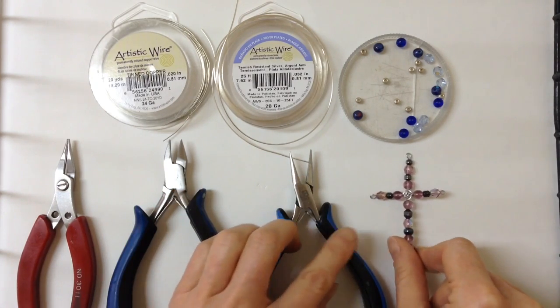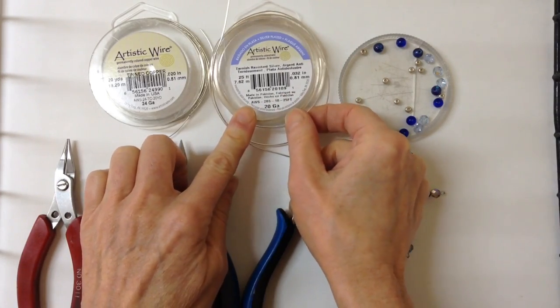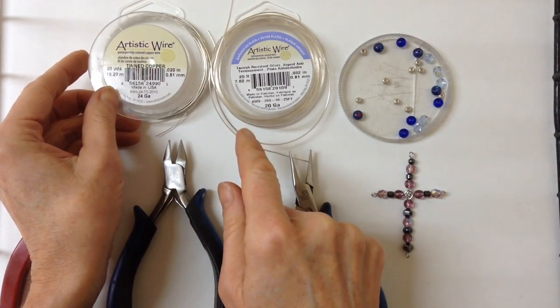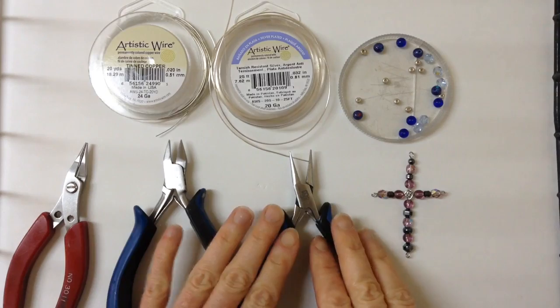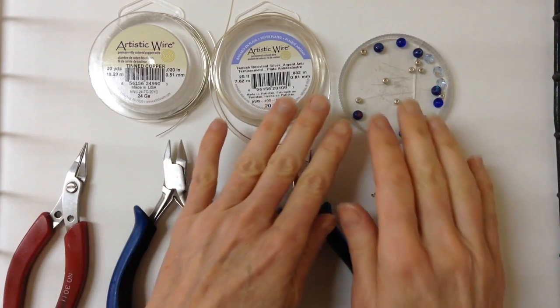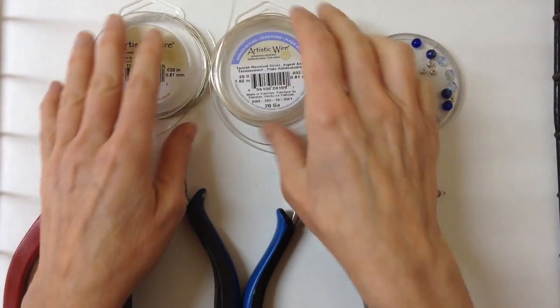What you're going to need for this project is 20 gauge artistic copper wire and a thinner gauge like 24 gauge to hold the pieces together. You'll need your flat pliers, your cutters and your round pliers, and also a variety of beads.